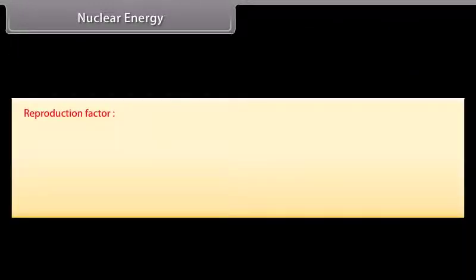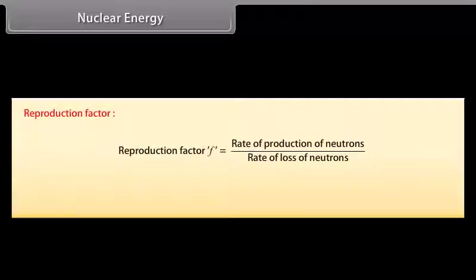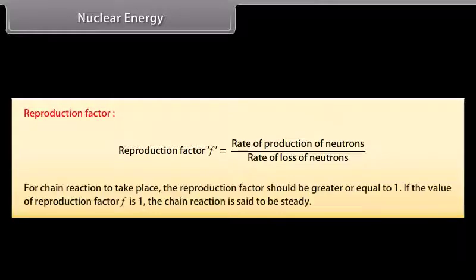Reproduction factor. It is defined as the ratio of rate of production of neutrons to the rate of loss of neutrons. For chain reaction to take place, the reproduction factor should be greater or equal to one. If the value of reproduction factor F is one, the chain reaction is said to be steady.